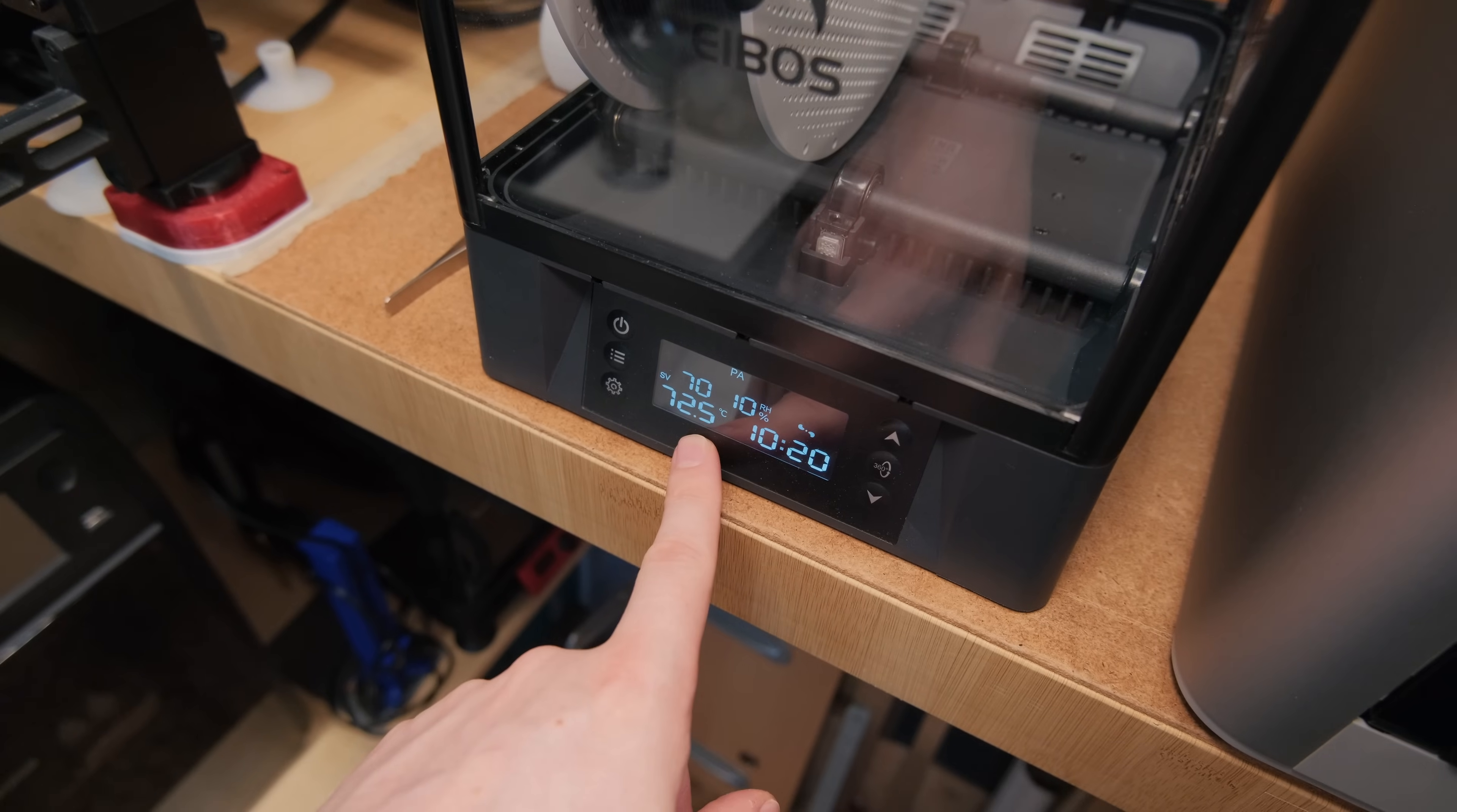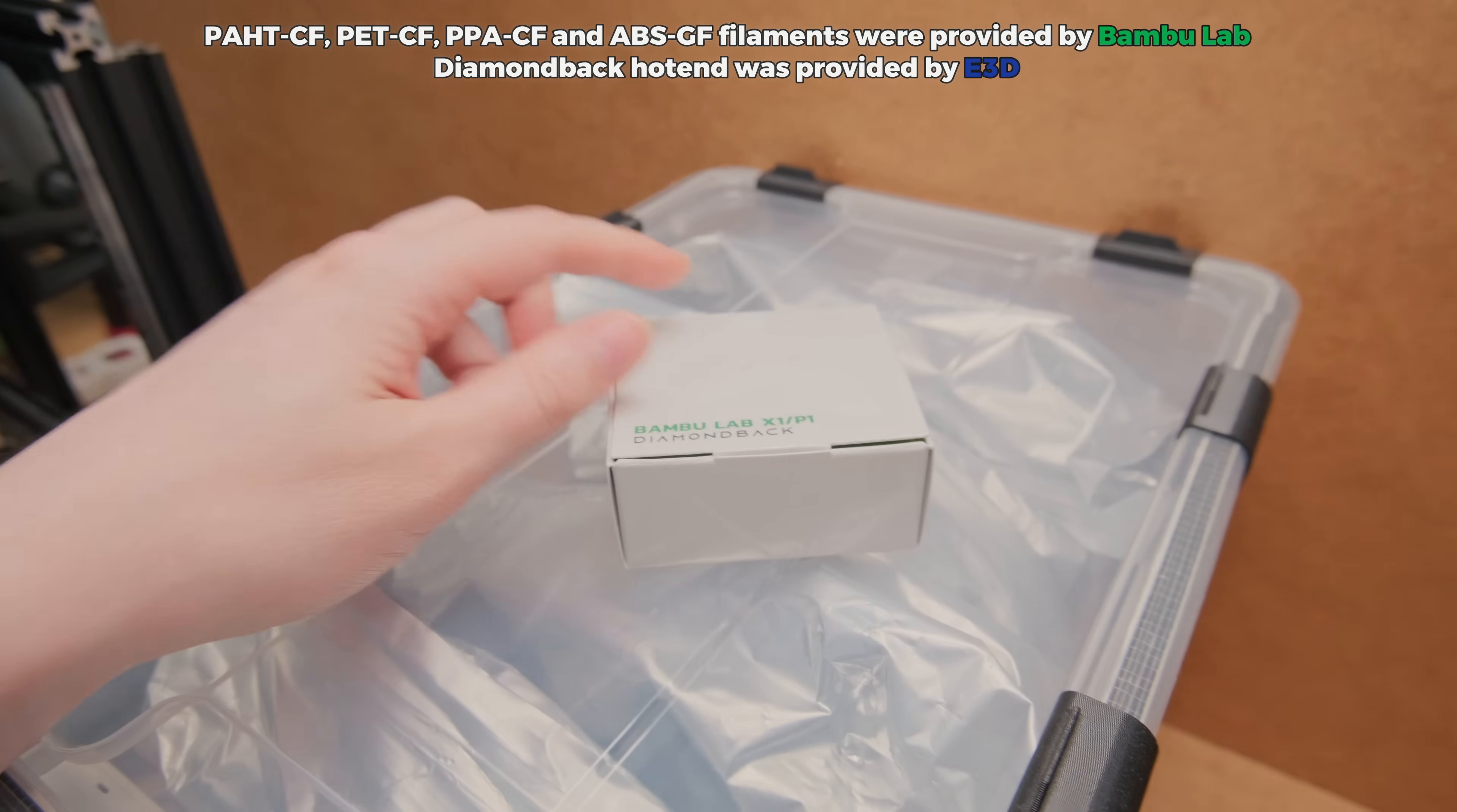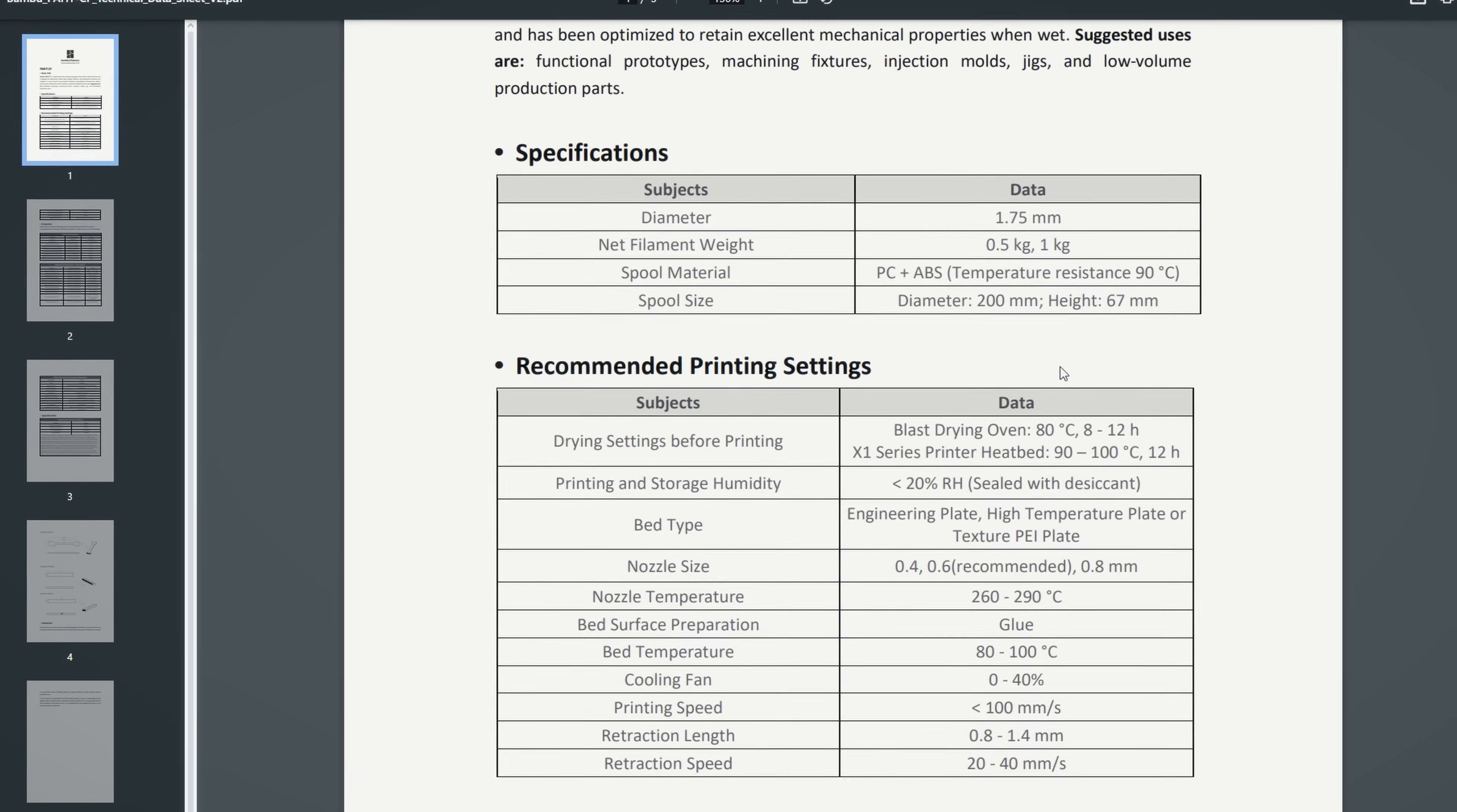I started with a carbon fiber filled high temperature nylon material. All these filaments were provided by Bambu Lab for me to test and provide my unbiased opinion based on my testing data. I don't know why, but printing this nylon with a stock Bambu hotend provided surprisingly low layer adhesion overall. However, the interesting point was that the strength improved when printing at higher speeds and flow rates. I won't act surprised because after all the testing I figured out why that is.